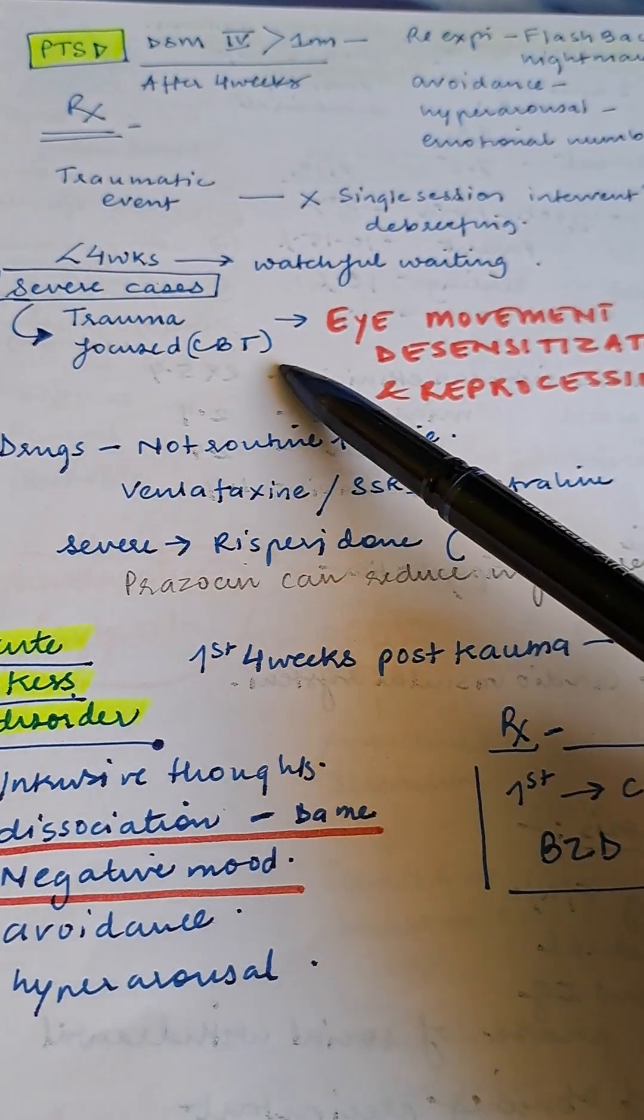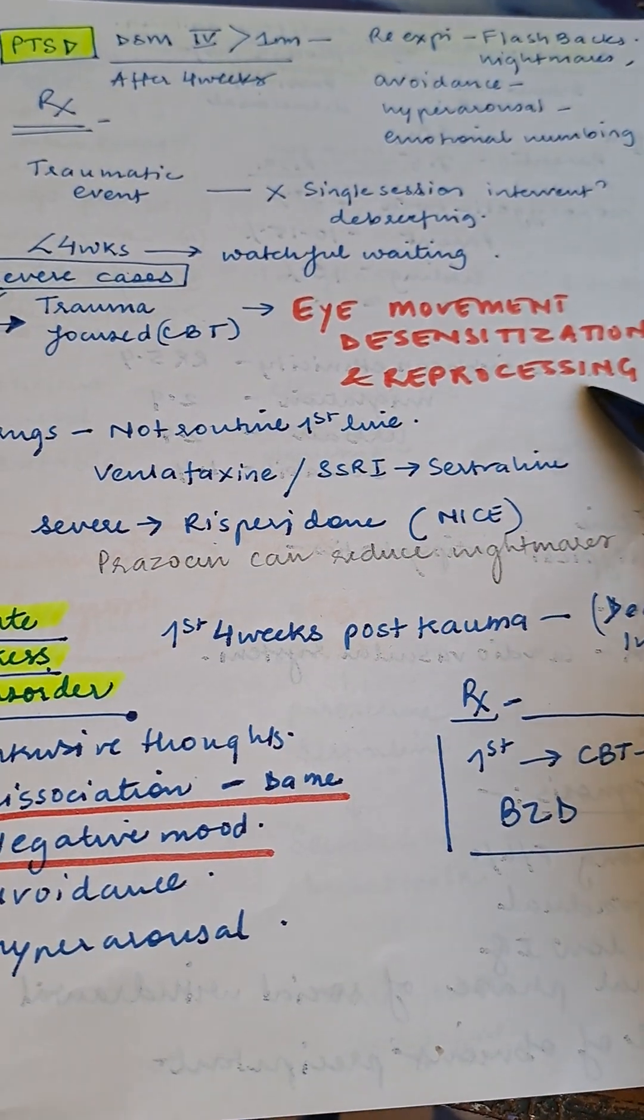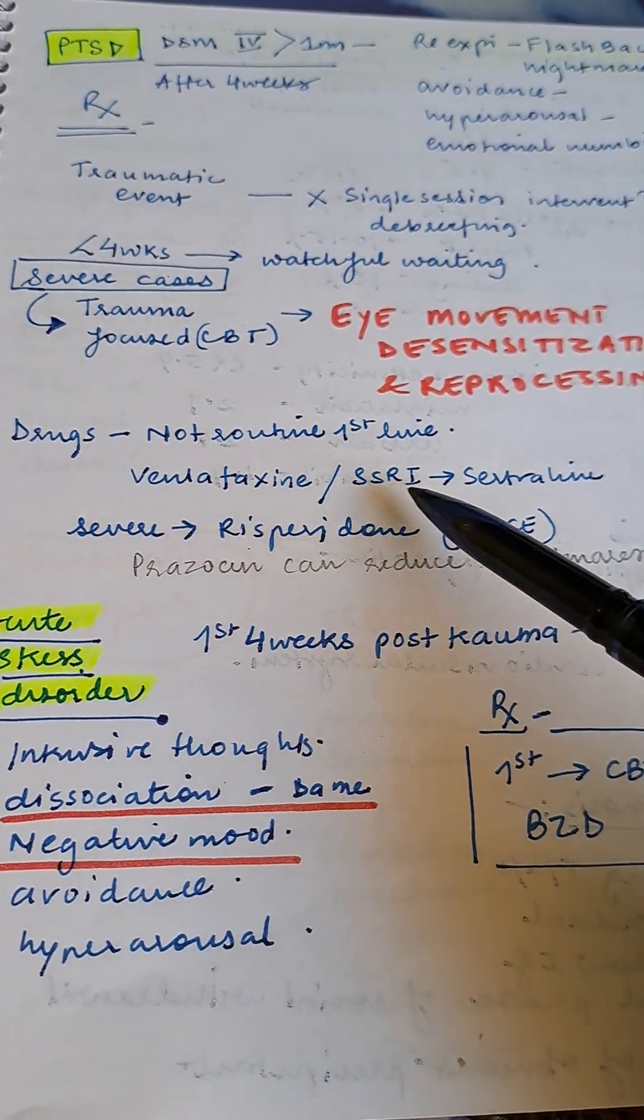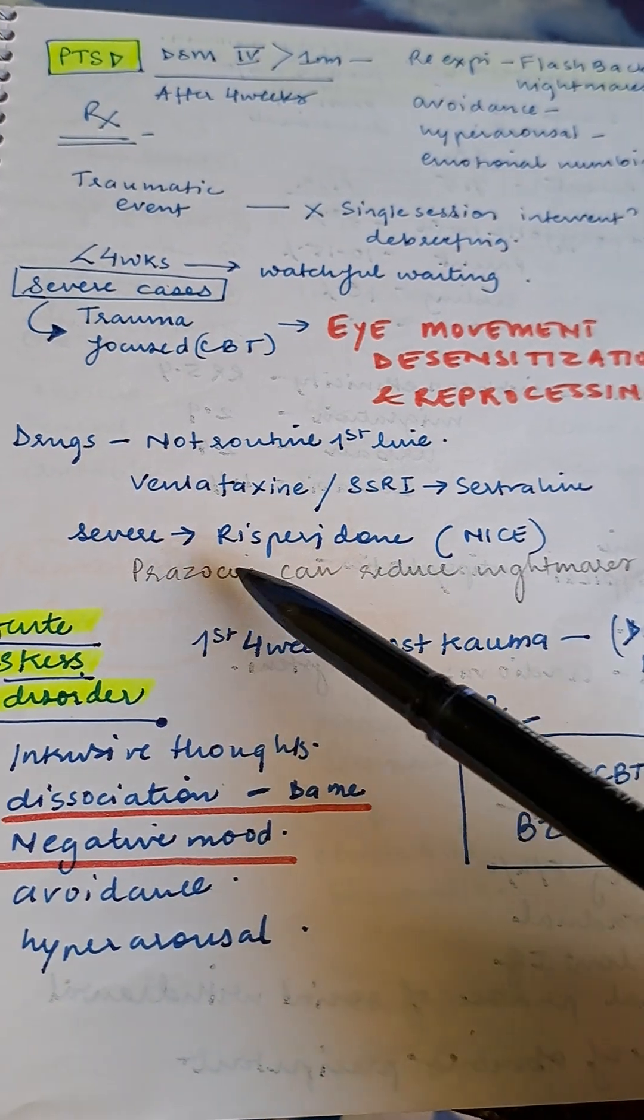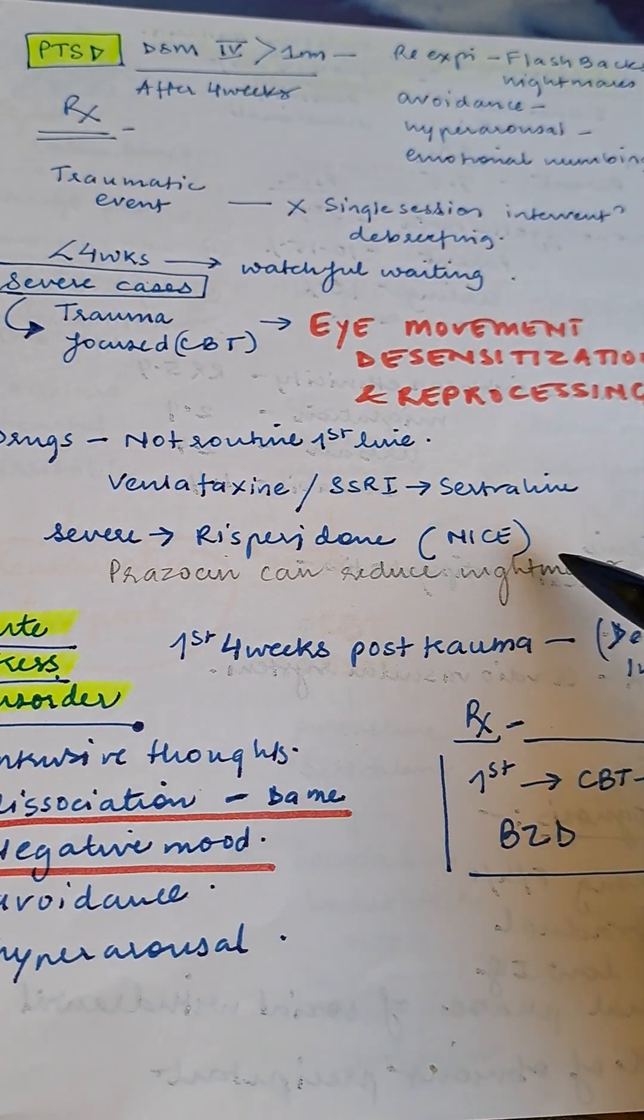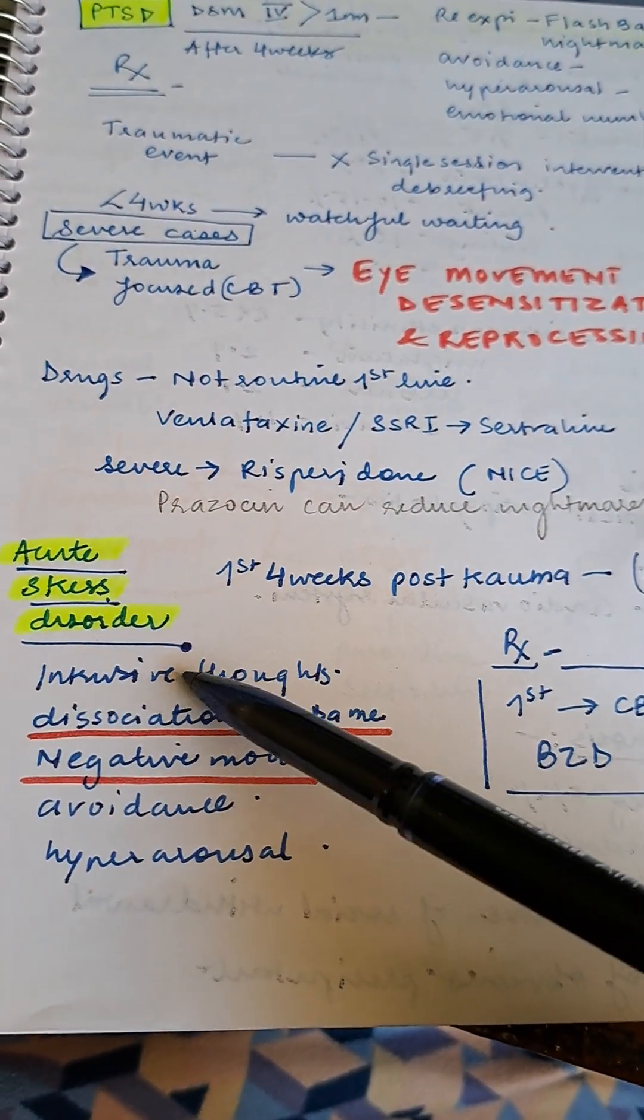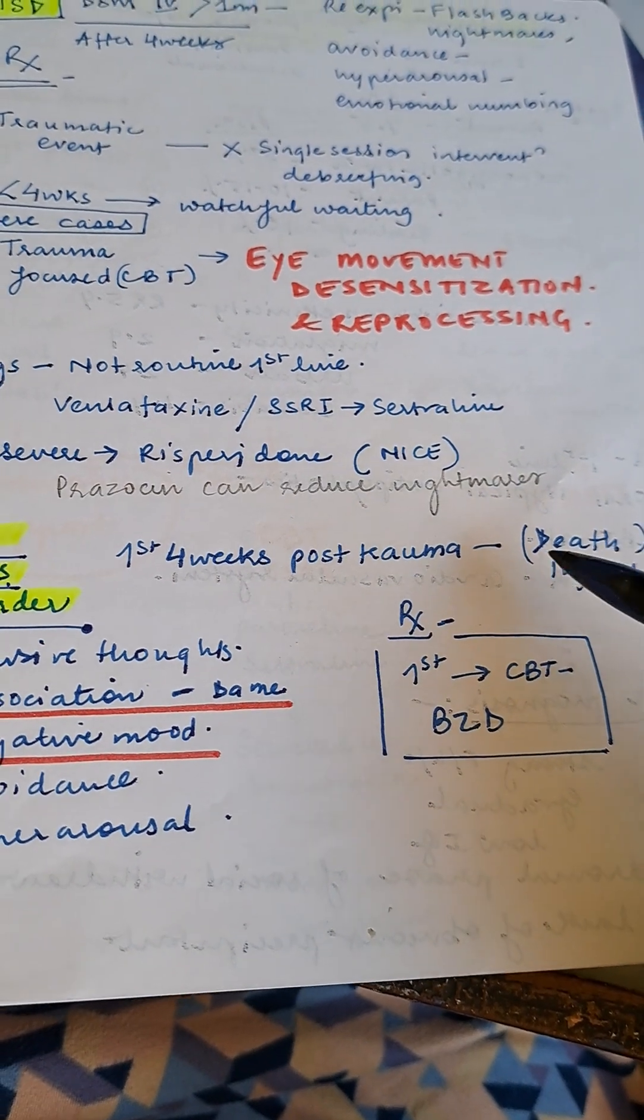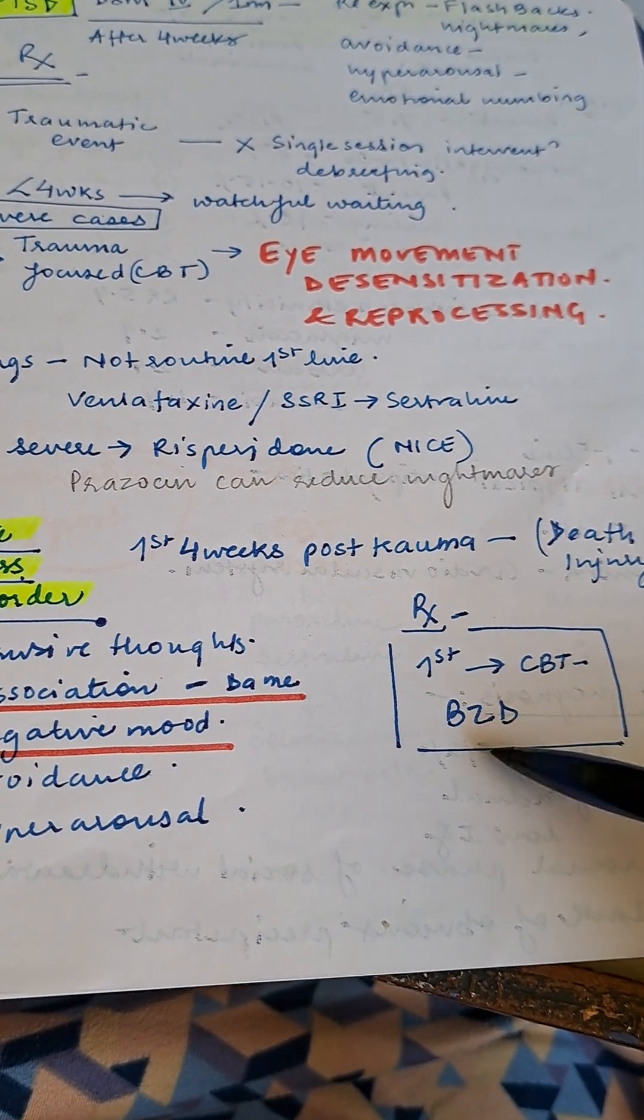In severe cases, trauma-focused CBT and eye movement desensitization and reprocessing is done. Drugs are not routinely used. SSRIs can be tried in severe cases. Prazosin can reduce nightmares.